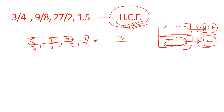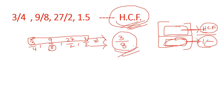For LCM of fractions, we take LCM of numerators over HCF of denominators. The denominators are 2, 4, 8 — the LCM is 8. So LCM of the fractions is 8. Therefore the final answer is HCF = 3/8. We add the numerators for HCF and denominators for LCM, giving the answer 3/8.